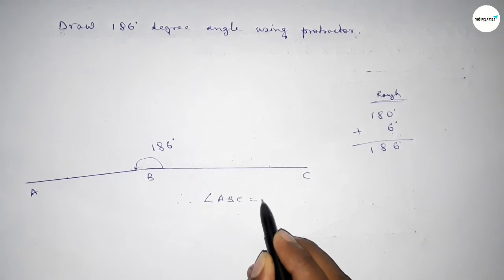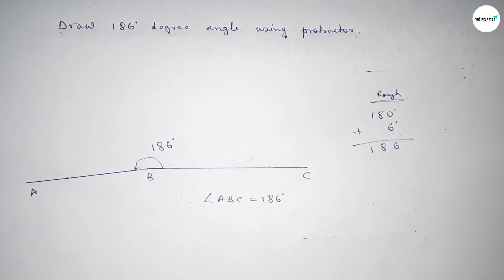Therefore, angle ABC equals 186 degrees. That's all. Thanks for watching. If this video is helpful to you, then please share it with your friends.